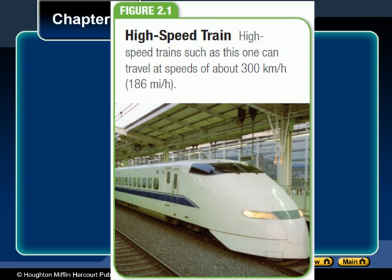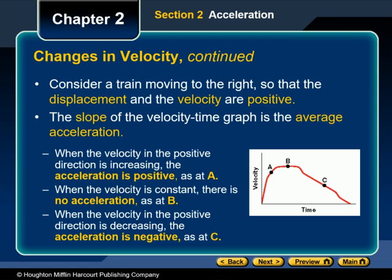The figure on the screen here shows a high-speed train leaving a station. Imagine that the train is moving to the right so that displacement and velocity are positive. The velocity increases in magnitude as the train picks up speed. Therefore, the final velocity will be greater than the initial velocity, and delta v — the change in velocity — will be positive. When delta v is positive, the acceleration is positive.